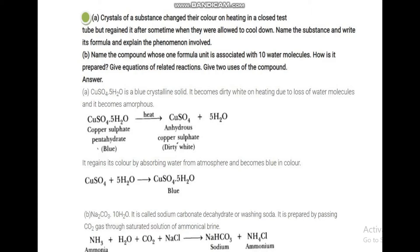Crystals of a substance change their color on heating in a closed test tube but regain it after some time when allowed to cool down. Name the substance, write its formula, and explain the phenomena involved. The color change here is connected to water of crystallization — the color changes on heating and is regained on cooling.